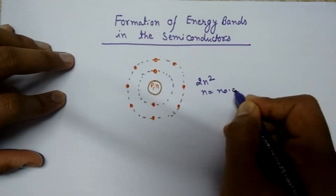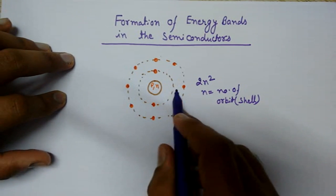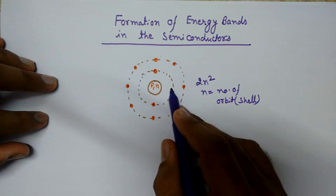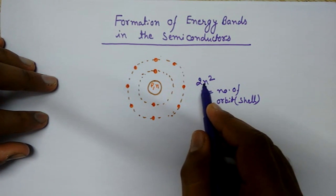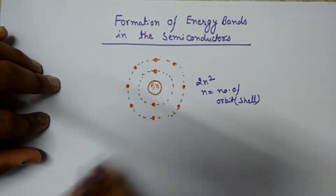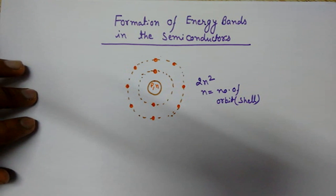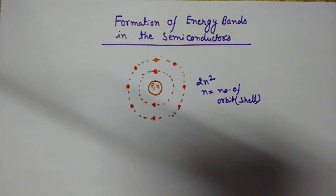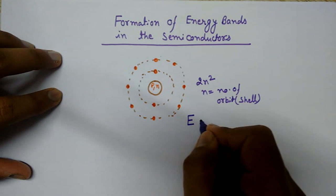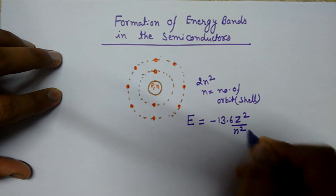Here n equals 1 for the first orbit and n equals 2 for the second orbit. If you place n equals 1, it gives you 2. If you place n equals 2, then 2 into 2² equals 8, so the second orbit has 8 electrons. If you want to calculate the energy of any electron in any atom, you can use this formula: Energy equals minus 13.6 Z² divided by n².